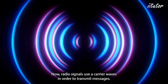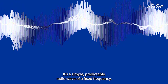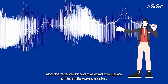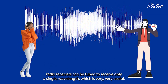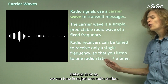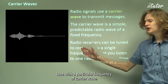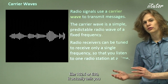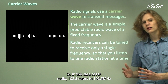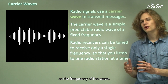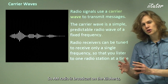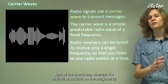Radio signals use a carrier wave to transmit messages. A carrier wave on its own is a simple, predictable radio wave of a fixed frequency — the broadcaster knows the exact frequency to send, and the receiver knows the exact frequency to receive. Radio receivers can be tuned to receive only a single wavelength, so instead of receiving all stations at once, we can tune into just one. The numbers on radio stations — like 102.5 for FM or 630 for AM — tell you the frequency of the carrier wave in megahertz or kilohertz respectively.